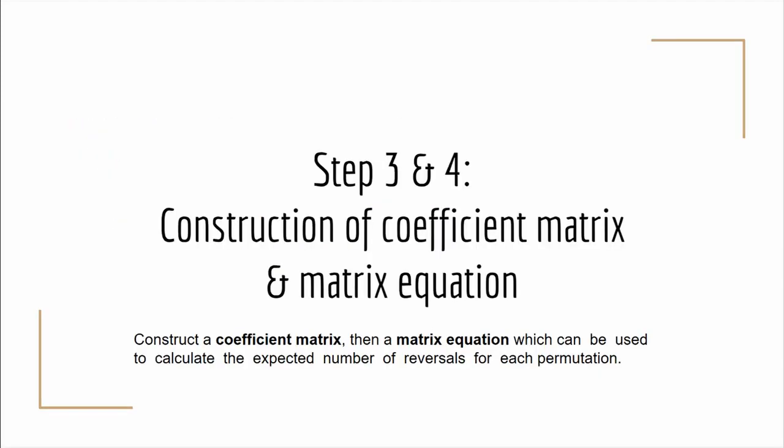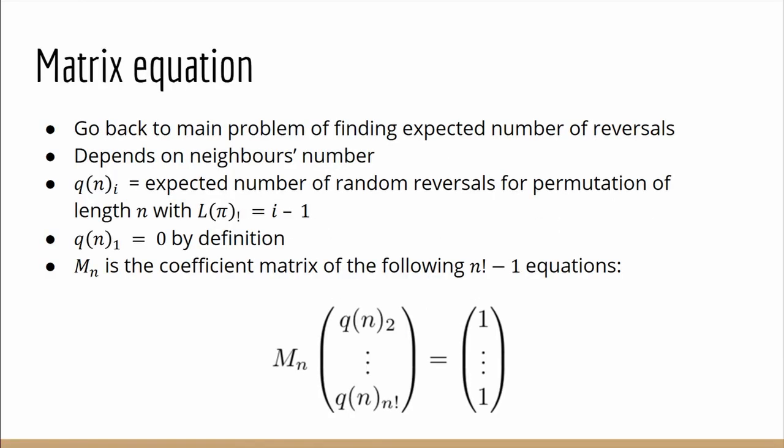So then we can move on to construct the coefficient matrix and the matrix equation. Going back to the main problem of finding the expected number of reversals, we found that the number for a particular permutation depends on its neighbors and so on and so on. So then we have to actually write our whole series of equations and solve them. After assigning the variables we found that q(n)_1 equals 0 by definition because it just asks how many reversals does it take to transform the identity permutation to itself. And for the rest we have to write down n factorial minus 1 equations and this can be more represented cleanly with a matrix equation shown here. Note that M_n is defined using this equation.